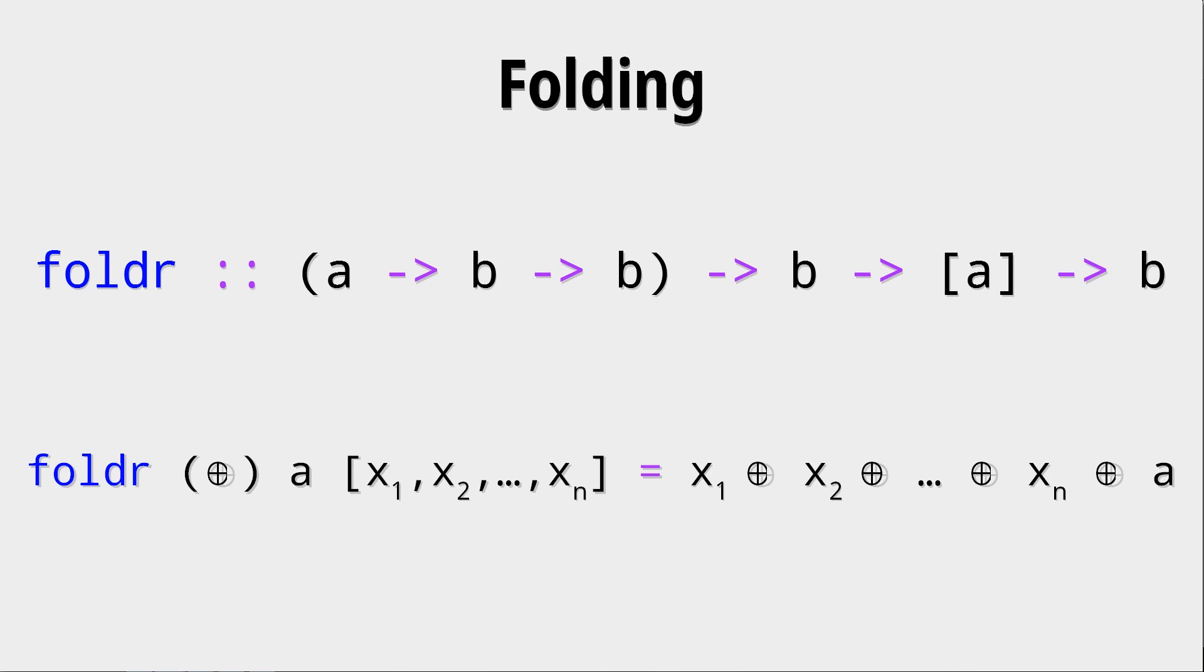And then you have a list going from x1 to xn and fold r is just the combination of all the values with that binary function and its starting value. You need that starting value, of course,